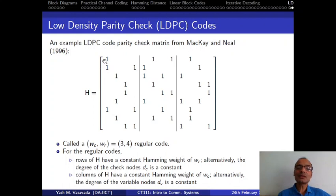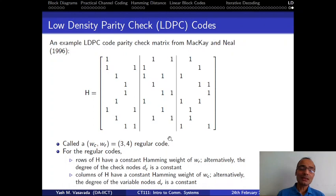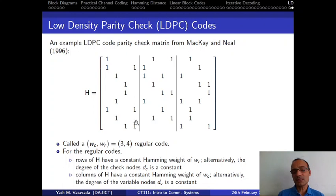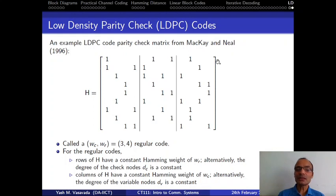This is called a (3,4) regular code, because the degree of both the check node and the variable node is constant. DV equals 3, DC equals 4. In fact, 3 over 4 is also the ratio of the number of rows divided by the number of columns of the parity check matrix. If an LDPC code is regular, that always holds: DV divided by DC always equals the number of rows of the H matrix divided by the number of columns.